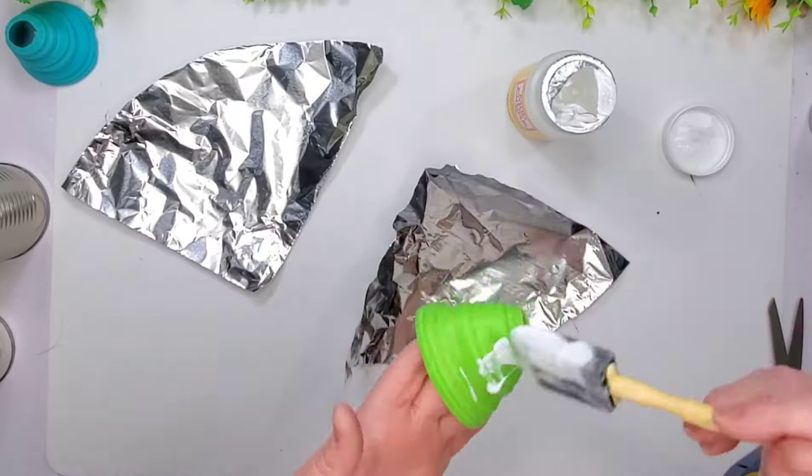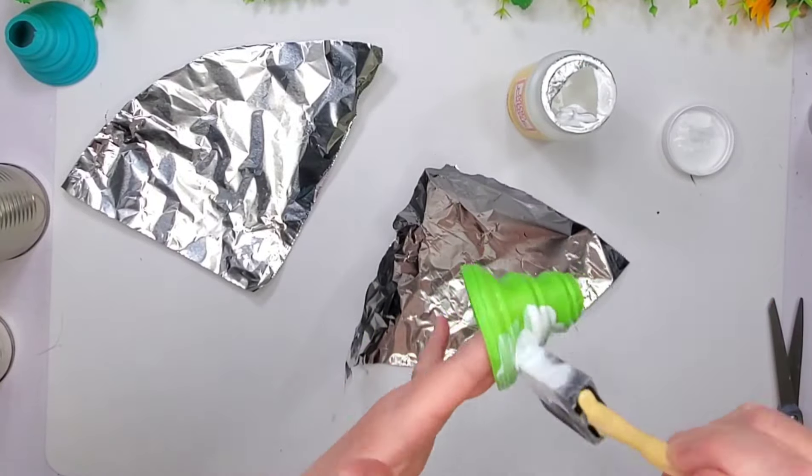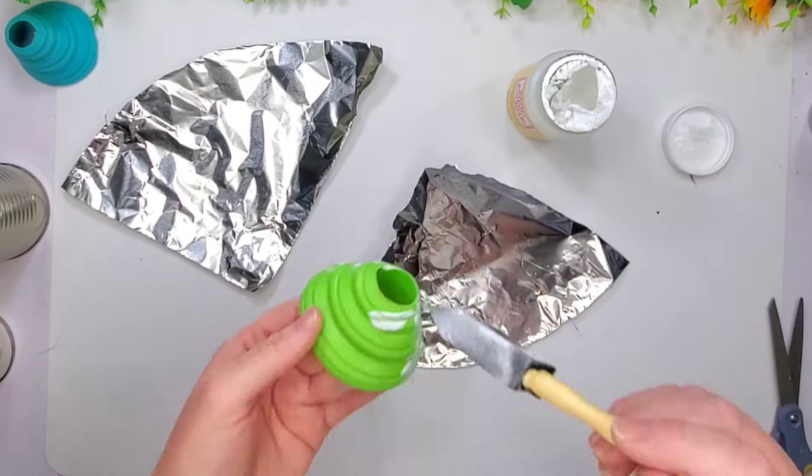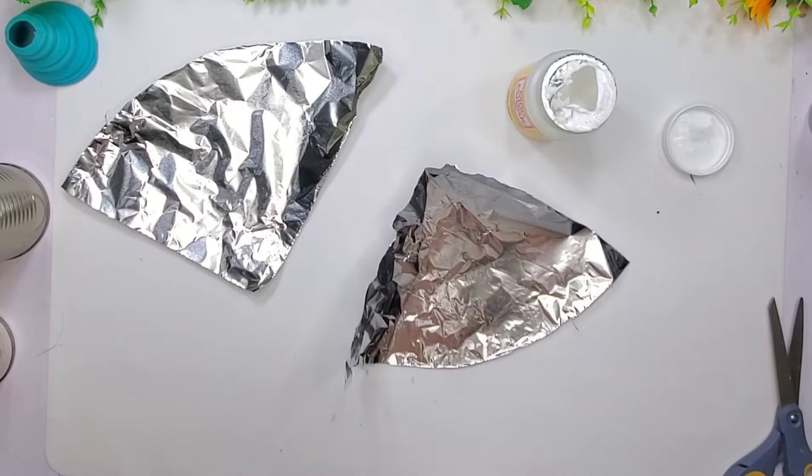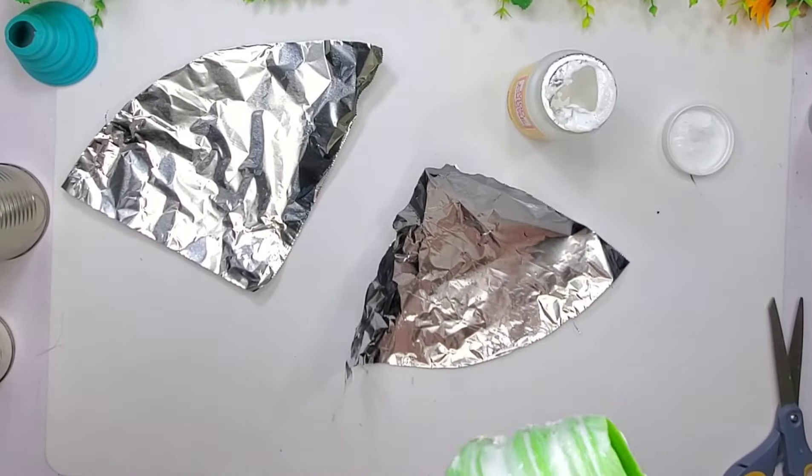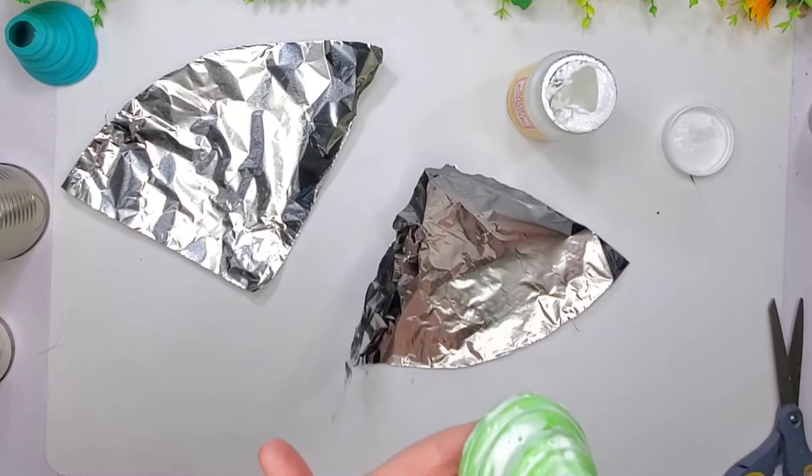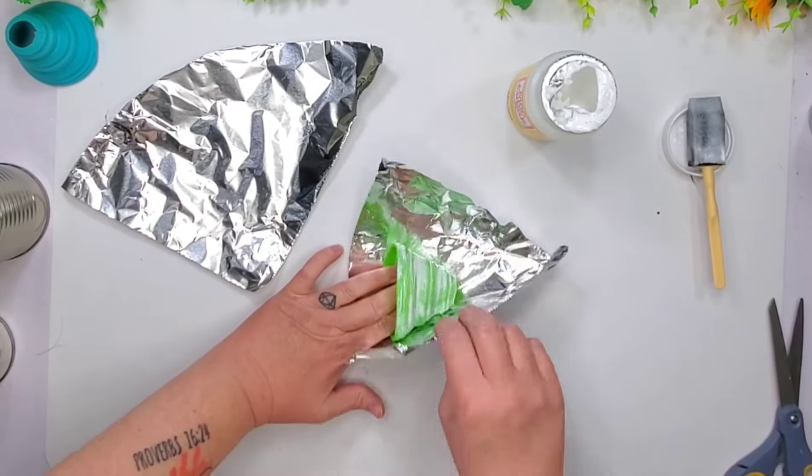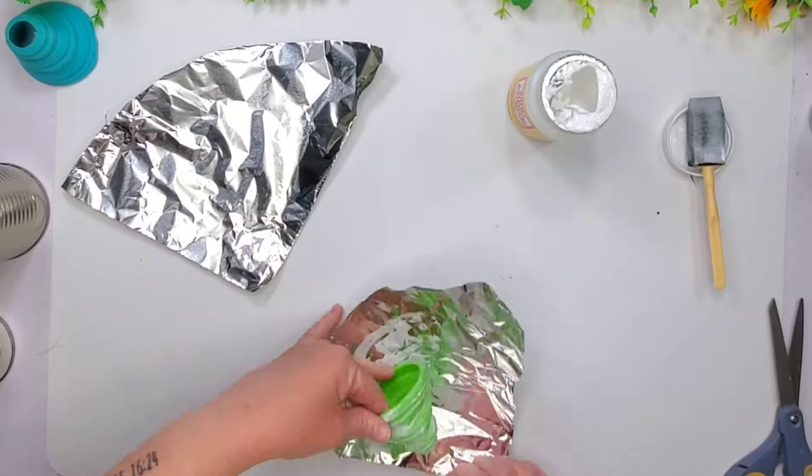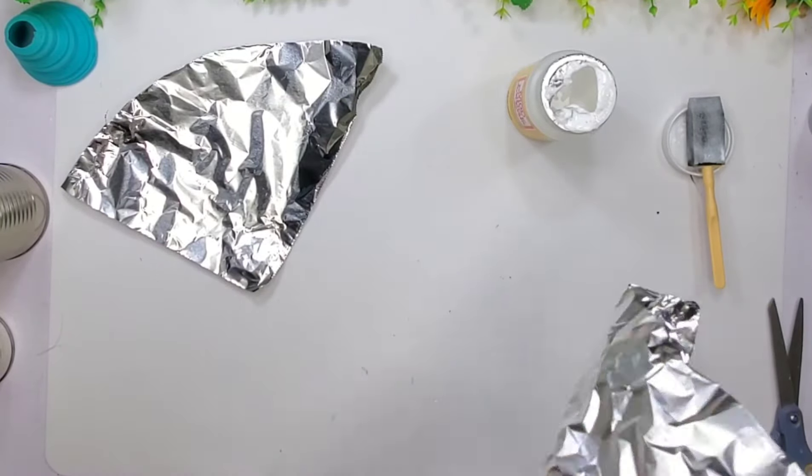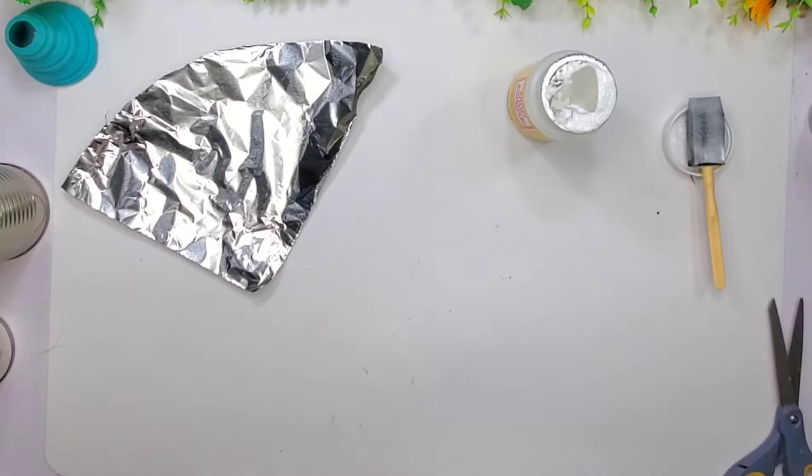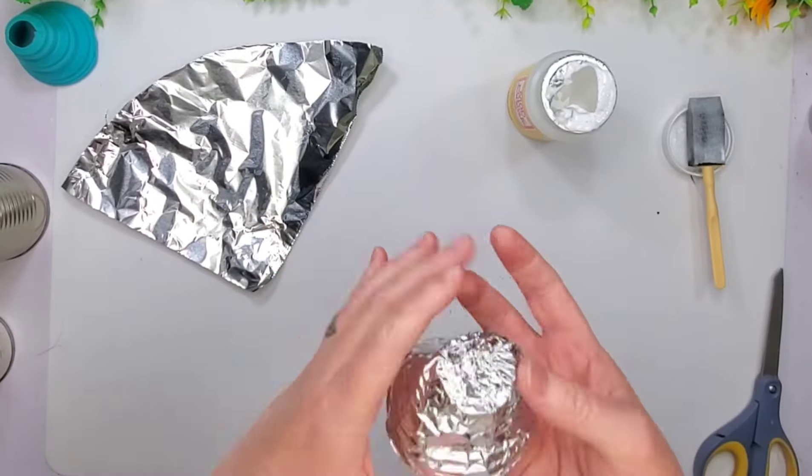I probably should have ended up using the tacky glue for this. It probably would have been easier than the Mod Podge, but I did end up using Mod Podge. So what I'm doing here is I want that crinkly effect that you get when you crunch up the foil.